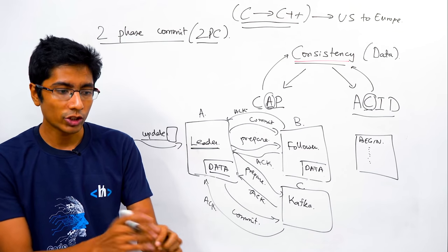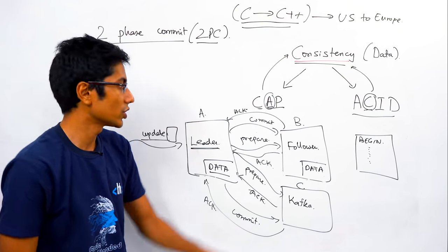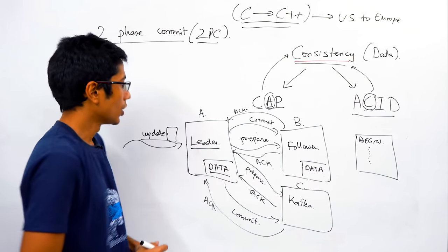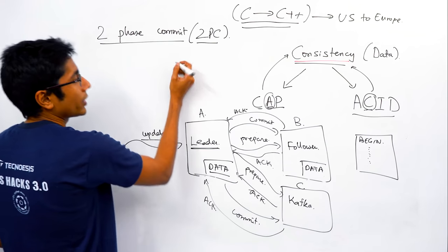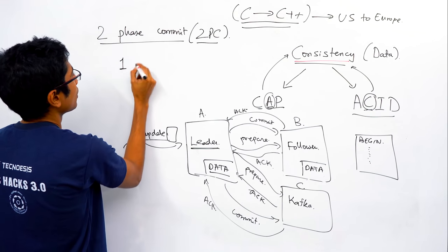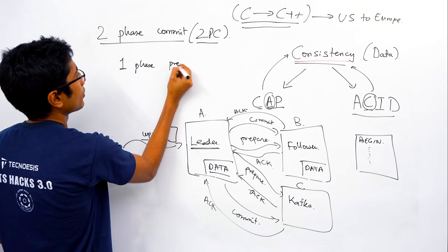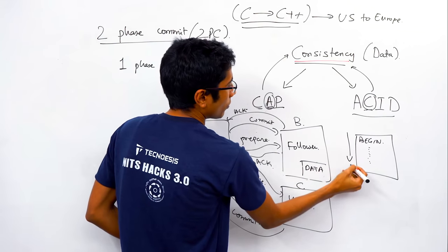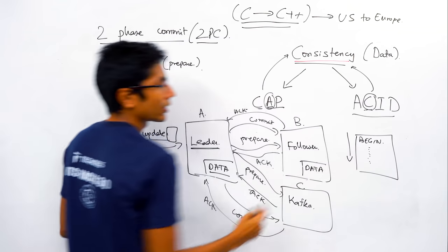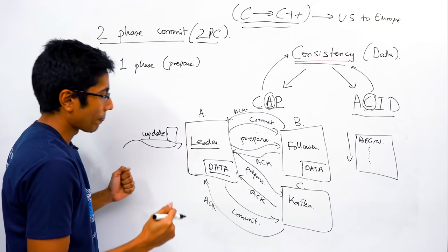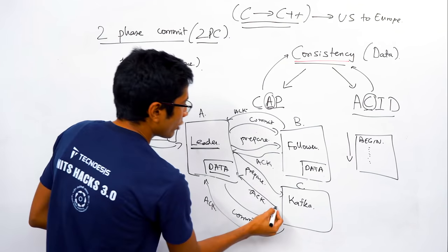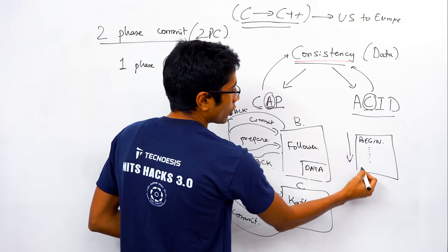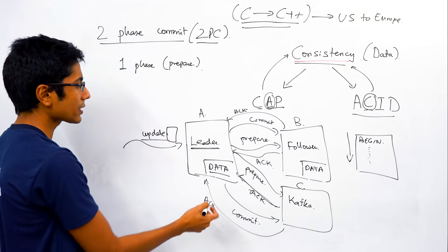So the two phases are: prepare — do all this work but wait for my final go-ahead — and then commit. When you send an acknowledgement during prepare, you're saying 'I've done this and I'm ready to commit.' The last commit statement is still remaining.